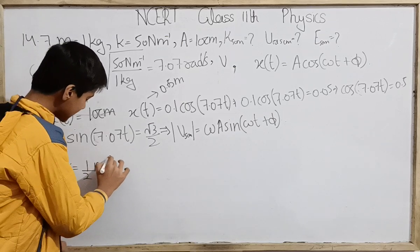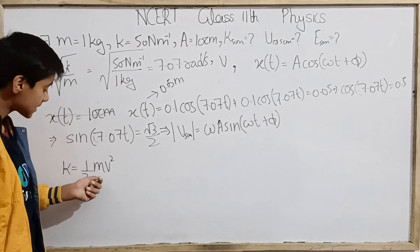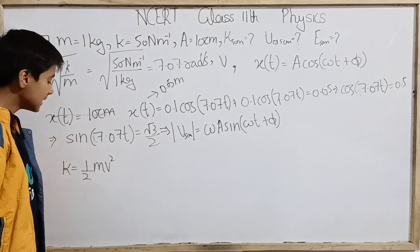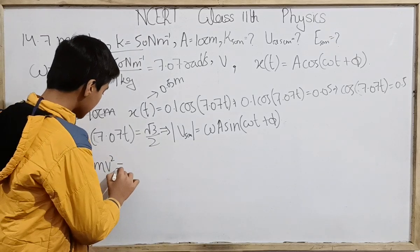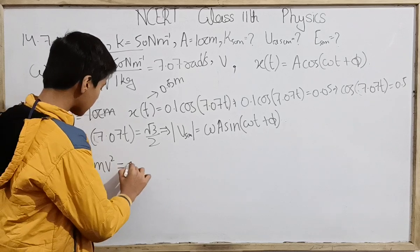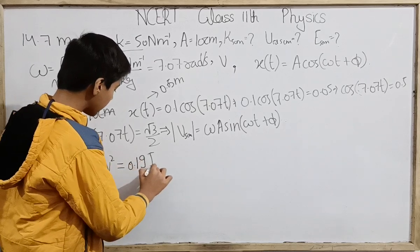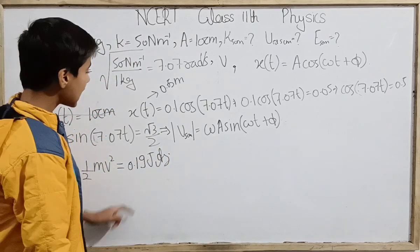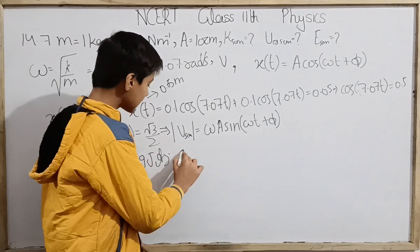Now kinetic energy at 5 centimeter is half mv squared. Mass is constant. This is the square of the velocity value. So if we are putting in all the values correctly, then kinetic energy we approximately get as 0.19 joules. That is what we are getting here.